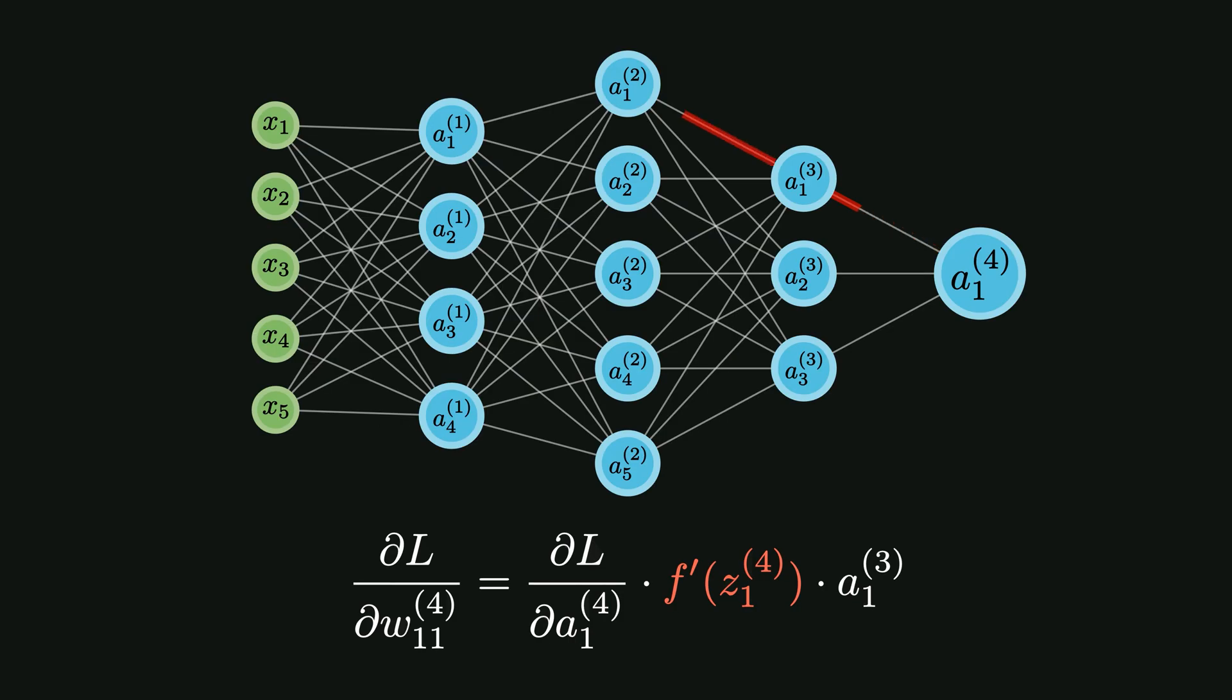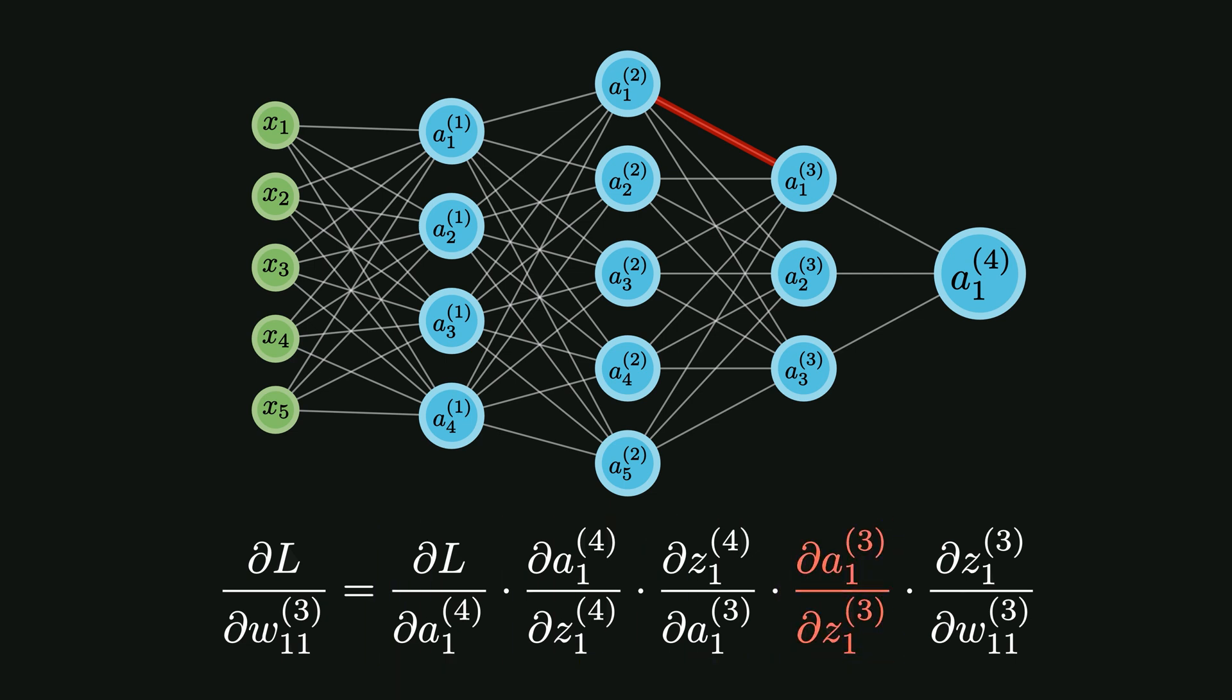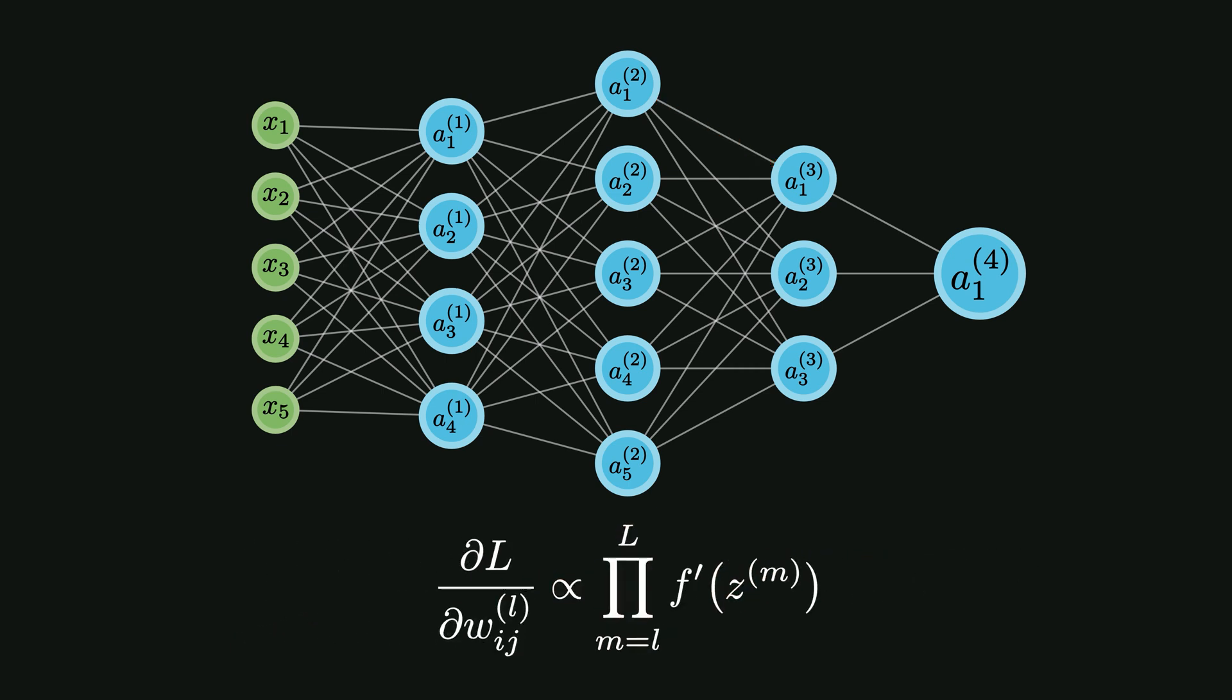If we calculate the gradient for any weight in a previous layer, the chain of derivatives grows even longer. Here, this term was calculated from the next layer during backpropagation, and this term here is the derivative of the current layer's expression. So in the gradient, we have two such derivative terms that will get multiplied. Similarly, for a general layer L, the gradient is proportional to the product of many of these derivatives.